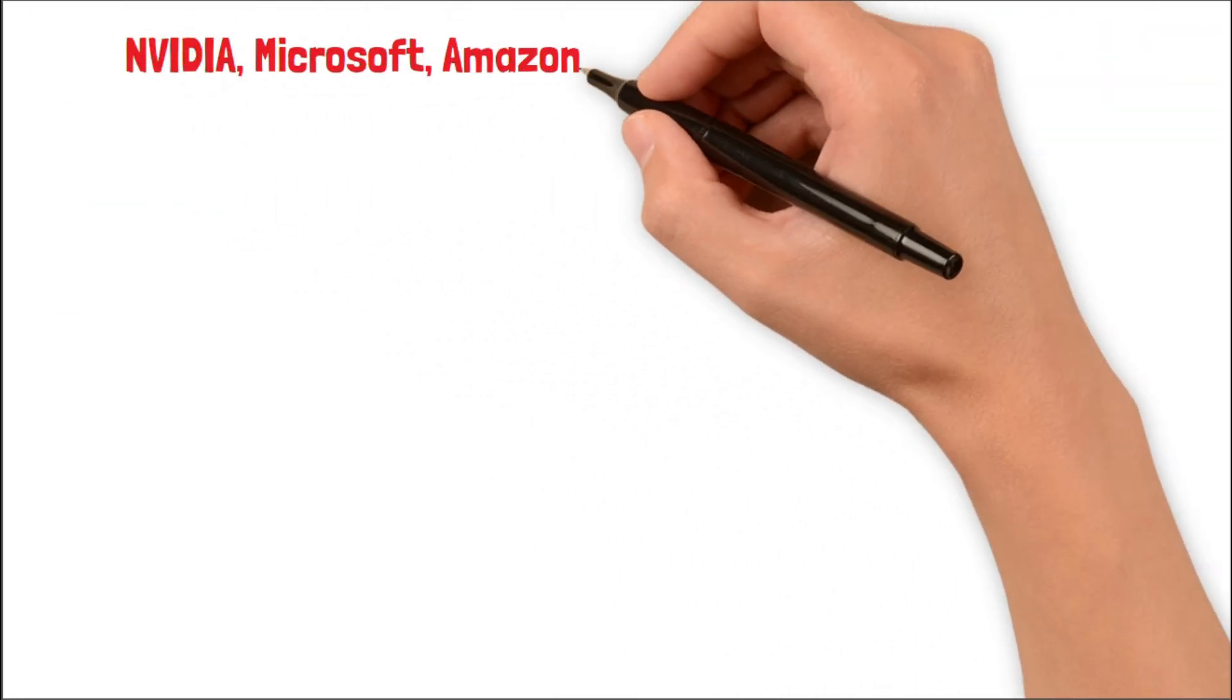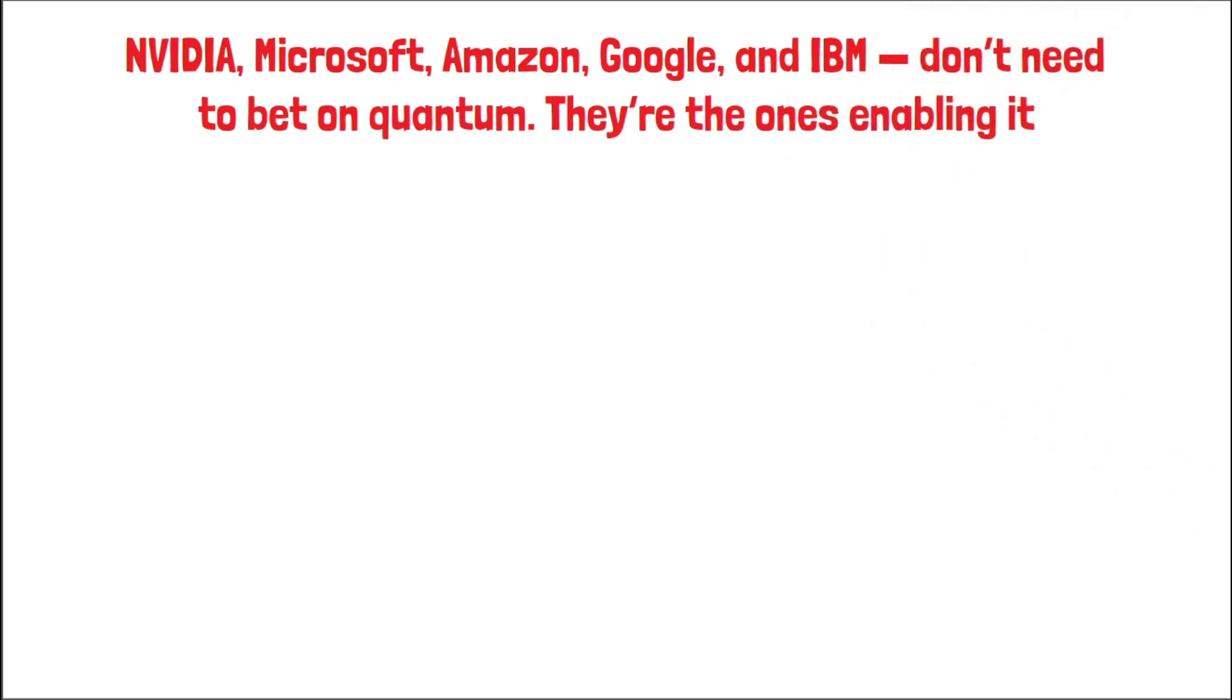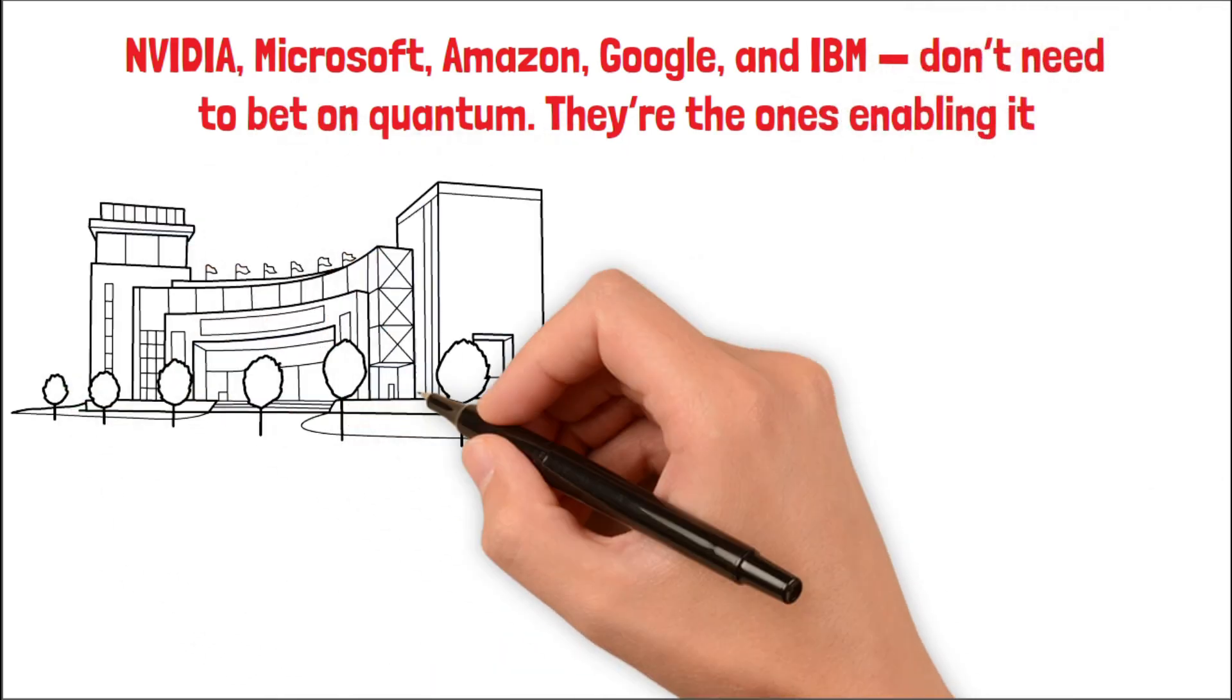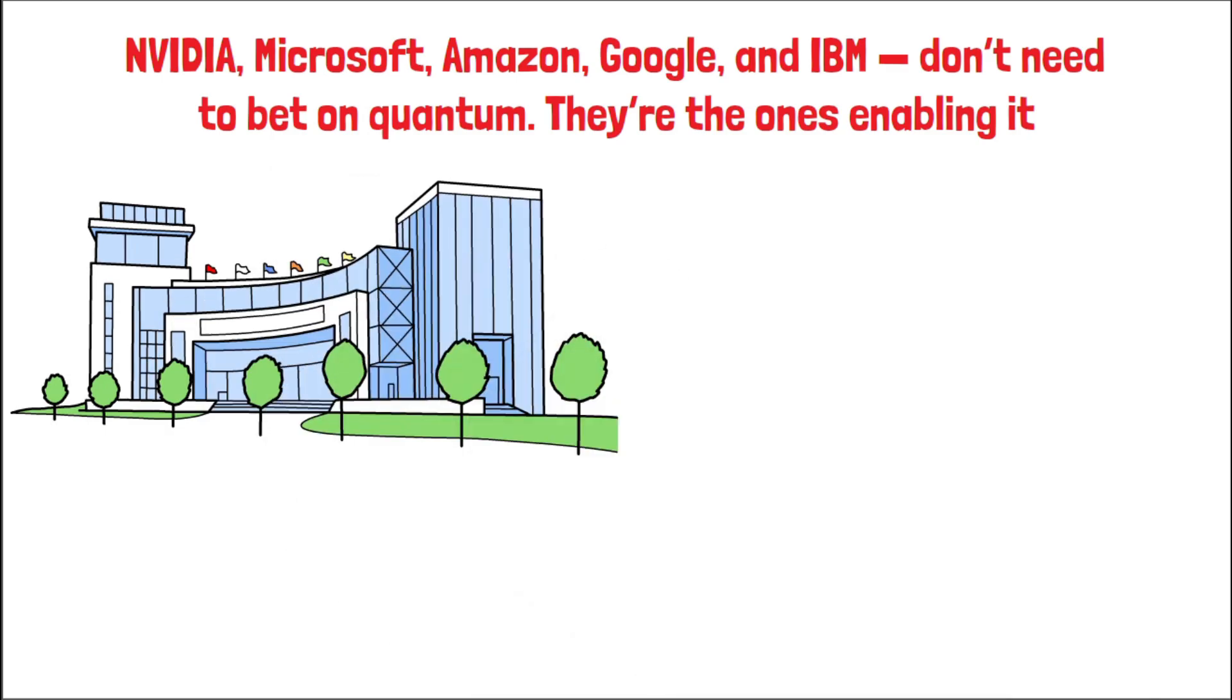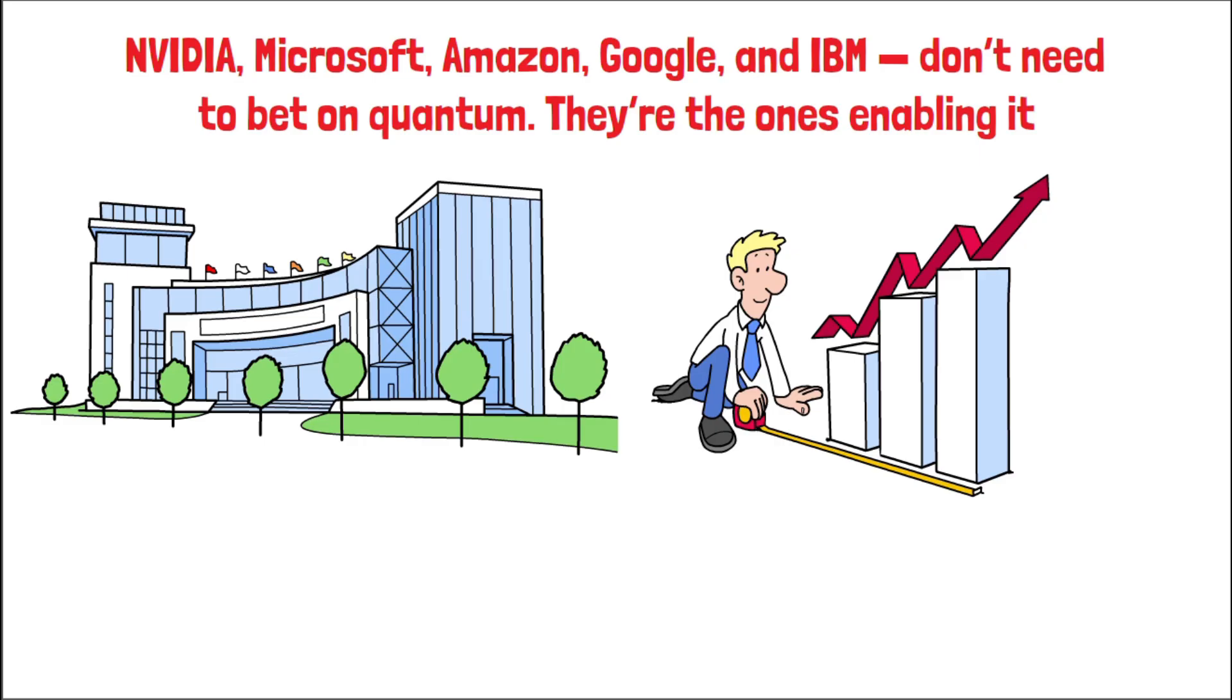These five companies, NVIDIA, Microsoft, Amazon, Google, and IBM, don't need to bet on quantum. They're the ones enabling it. And regardless of which hardware wins or when mass adoption hits, these giants are already profiting. That's why this layer is my foundation. It's safe, it's growing, and it ensures I'm in the game even if the timeline stretches.